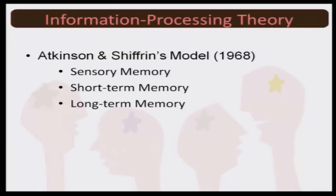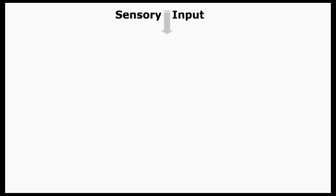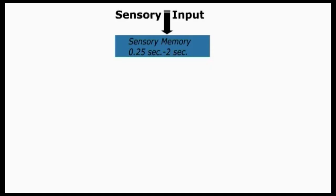Two models we would discuss. First, the Atkinson and Shiffrin model proposed in 1968, which tried to explain memory in a trifurcated format — saying that we have sensory memory, short-term memory, and long-term memory. Memory starts with a sensory input received from the environment, and this input is retained for a very brief time ranging from 0.25 seconds to 2 seconds.